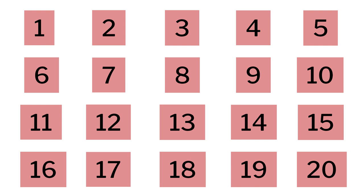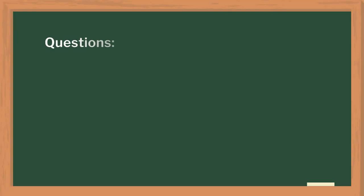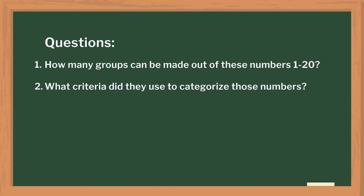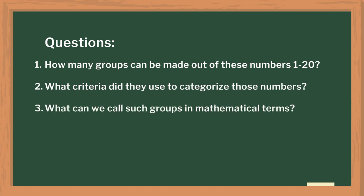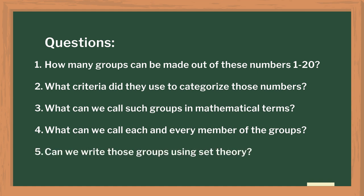After this introductory activity, I explained the concept of sets, the methods and rules of writing sets through the next activity. I distributed cards bearing numbers 1 to 20 among the students and asked them to categorize them into groups by using some criteria. Then I discussed those criteria with the students by asking questions like: How many groups can be formed using numbers 1 to 20? What criteria did they use? What can we call these groups in mathematical form? What is each member of that group called? And can we write those groups using set theory?